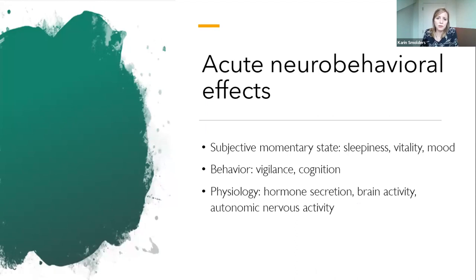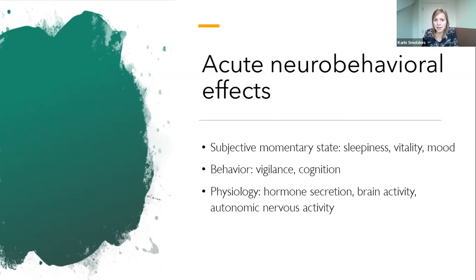We have discussed the non-visual effects via circadian processes quite substantially already. But light can also induce more acute neurobehavioral effects, meaning that it can induce instantaneous changes in our subjective momentary state in terms of sleepiness, level of vitality, and mood. But it can also induce changes in behavior in terms of how well we can sustain attention to specific stimuli, how well we can perform on cognitively demanding tasks, and it may also moderate our physiology in terms of brain activity and autonomic nervous activity.